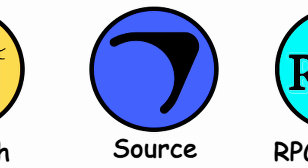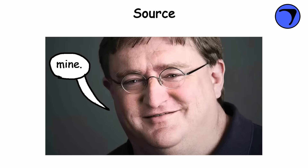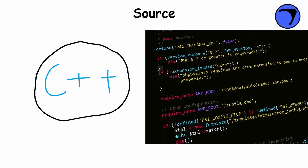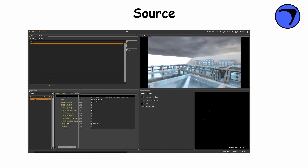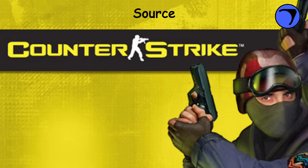Source was developed by Valve for Valve. It uses C++ for programming, offering extensive control over game mechanics and systems. The Source engine has been used by various developers and companies, but mostly for Valve games like Half-Life 2, Portal, and Counter-Strike.